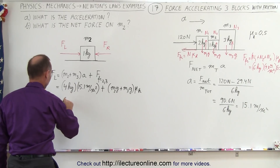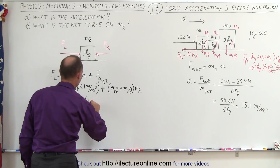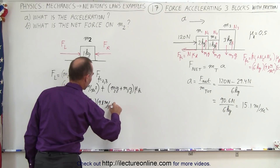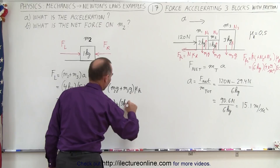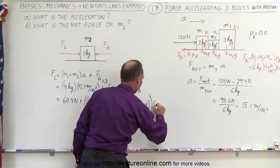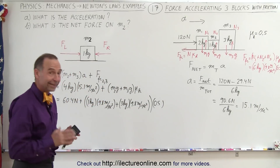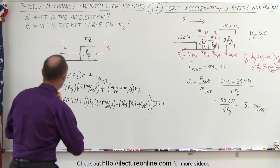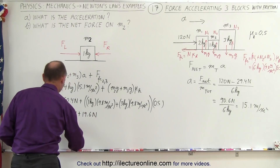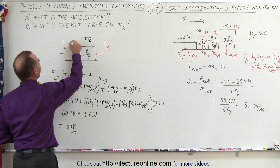That gives us 60.4 Newtons for the acceleration component, plus M2 (1 kg × 9.8) plus M3 (3 kg × 9.8), all times 0.5 for the friction component, which equals 19.6 Newtons. So the total force on the left is 60.4 + 19.6 = 80 Newtons.